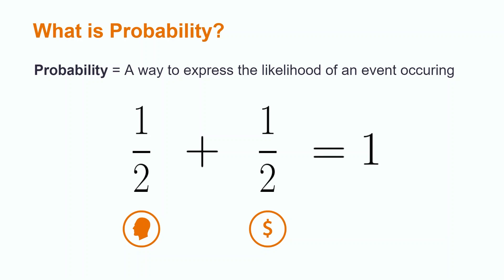All potential outcomes of an event are known as the sample space. In our coin example, heads or tails are the only two outcomes in our sample space.